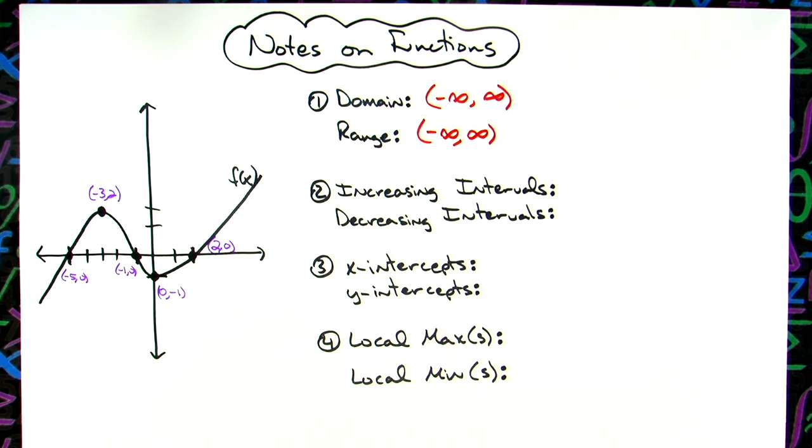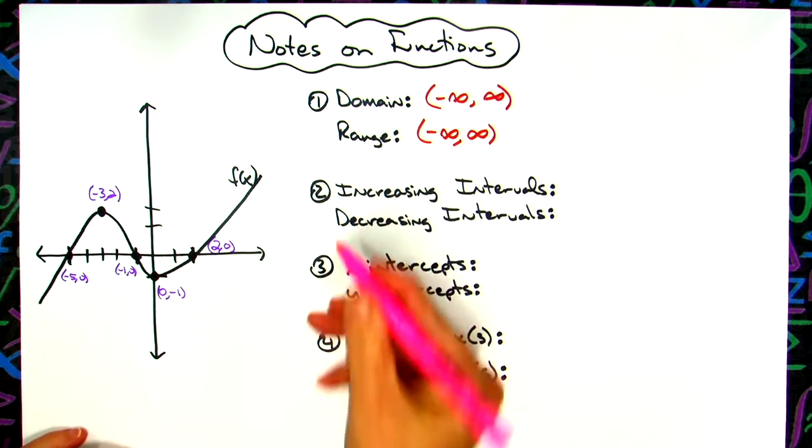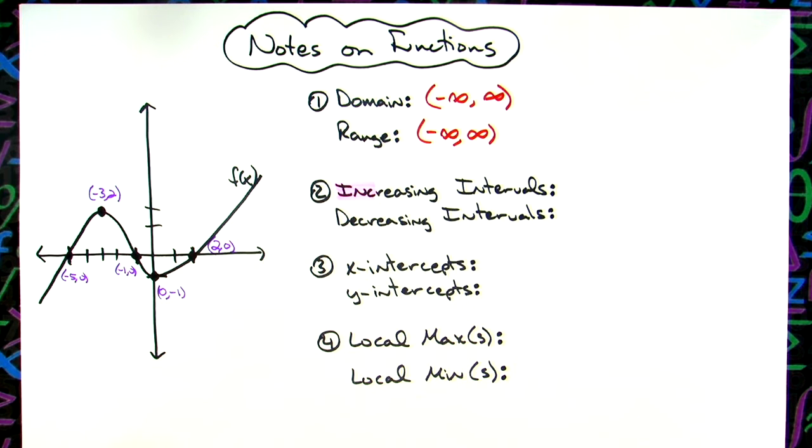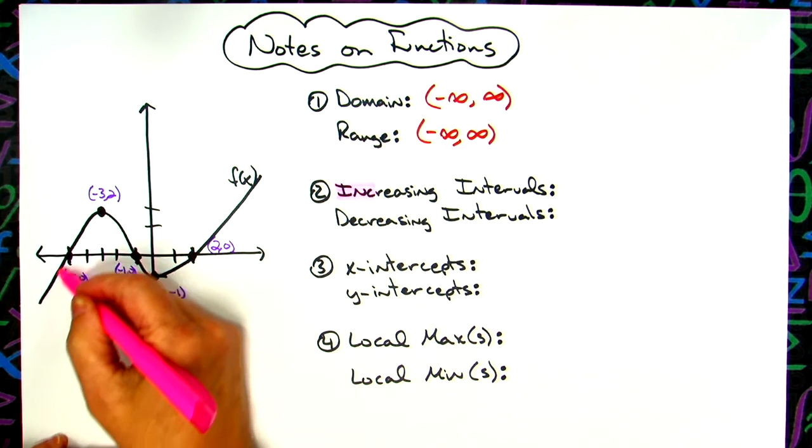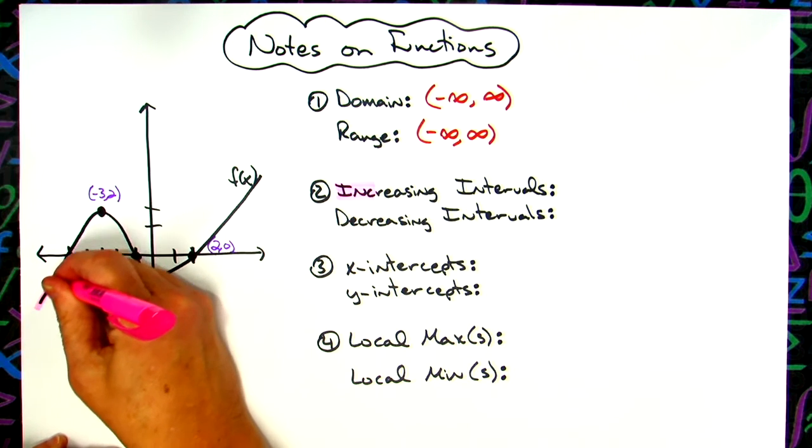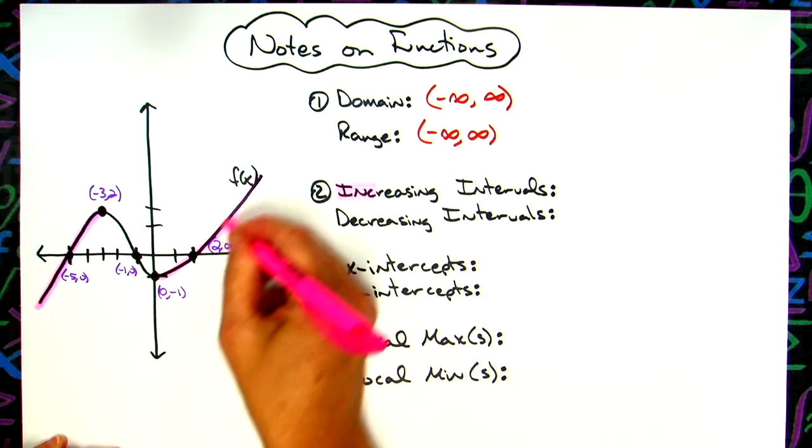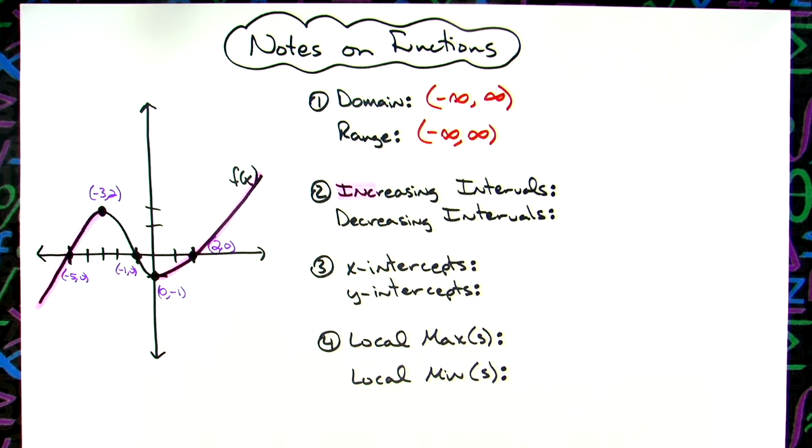Now for increasing and decreasing intervals, we need to know where is it increasing. So I'm going to highlight here on the graph, make it a little bit more clear. The graph is going up on this portion of the graph, so it's increasing. It is increasing over here on this portion of the graph. So I've got two sections there that are increasing.